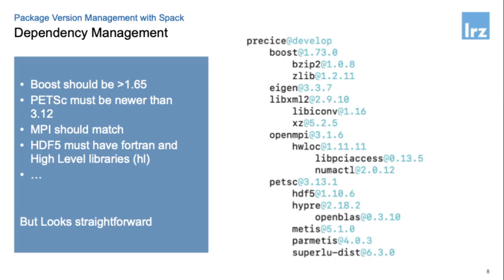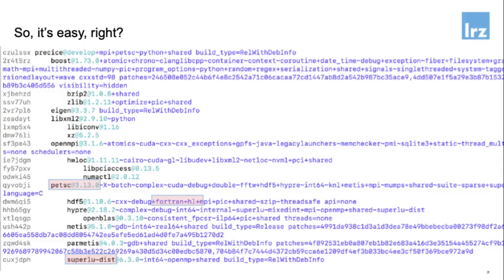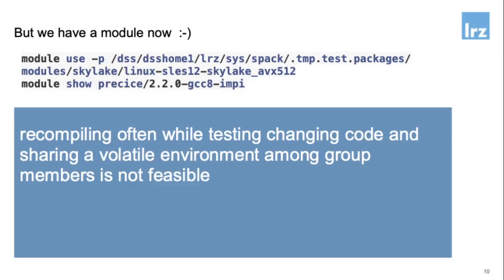You might think that most dependencies are already on the system and it should be straightforward to combine them and get an installation of PFloatran and Precise — but it's not quite so easy. Getting exactly the right matching dependencies was a lot of work, spending many hours compiling and recompiling only to find mismatches. For someone not willing to invest that effort, I would not recommend this approach on an HPC system. We did get it to run in the end and provide a module for Precise 2.20, compiled with GCC 8 and Intel MPI on the system.